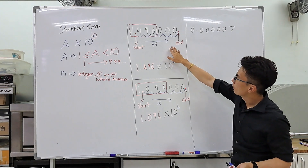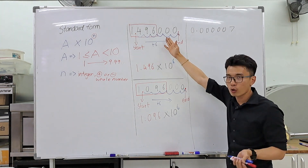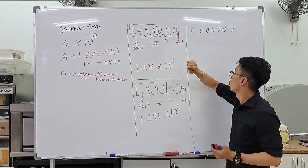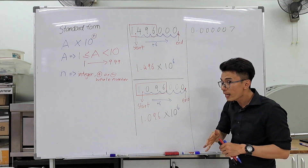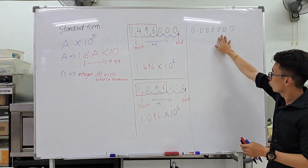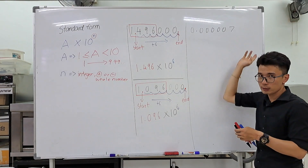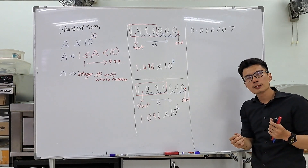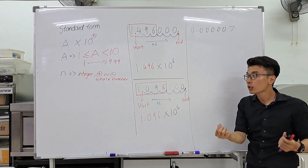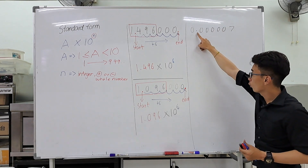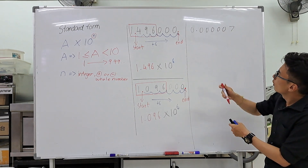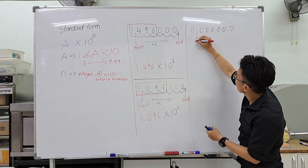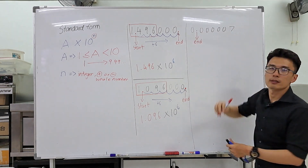What we did with a big number was look at the whole number and identify where the decimal point is — that will be the end. We will do the same thing here. This is my decimal number and we locate the decimal point, which is over here. This will be my end.